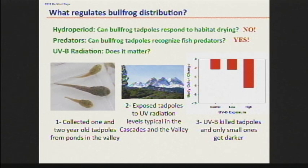We also looked at how they respond — a lot of amphibians will get darker, essentially tanning, which protects them to some degree, or they'll hide. What we found was that survivorship significantly decreased when tadpoles were exposed to UVB levels, both at the valley level of intensity and in the high Cascades. They also didn't respond correctly in terms of hiding and getting darker — they did not hide even in the highest UVB exposure treatments. Only the smallest tadpoles were able to get darker, and only in the really high UVB treatments did we see that darkening response.